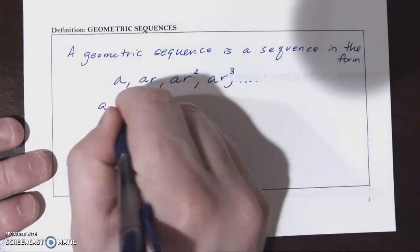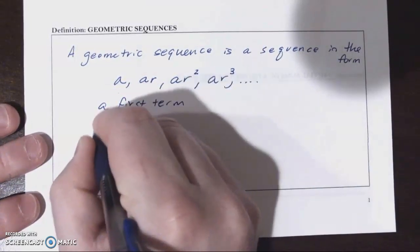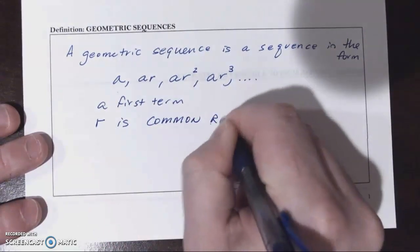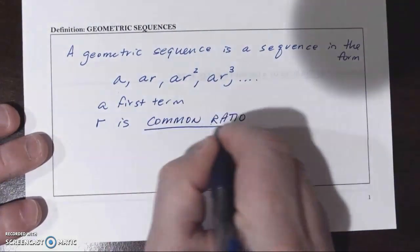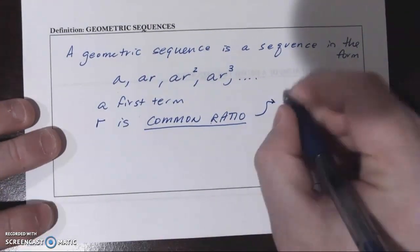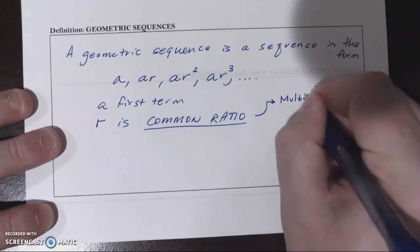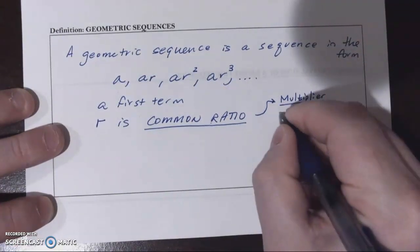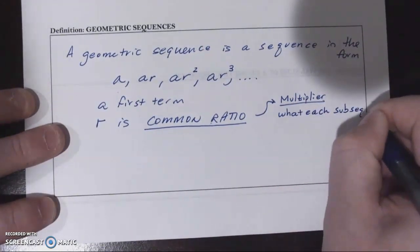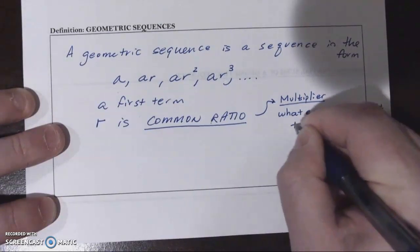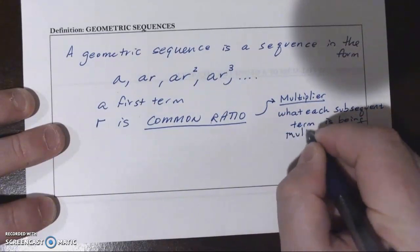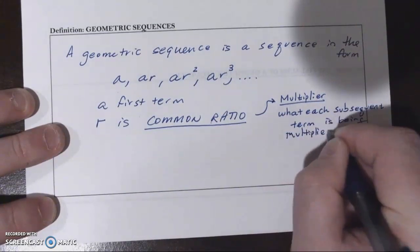Where A is the first term and R is what we call the common ratio. It's going to be a very important term for geometric sequences. And what this means is the common ratio is basically the multiplier. It's what each subsequent term is being multiplied to obtain.